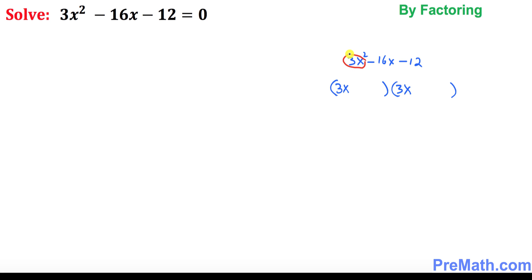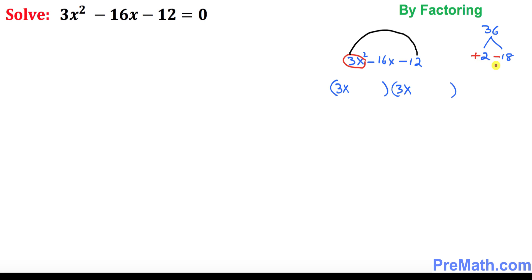The next thing is to multiply 3 times 12, the end numbers — don't worry about the negative sign. So 3 times 12 is going to be 36. Now we're going to find the factors of 36 that could give us 16. The possible factors are 2 and 18: when you multiply them you get 36, and if you subtract them you get 16. Since we are looking for negative 16, that means 18 is going to have a negative sign and 2 is positive.